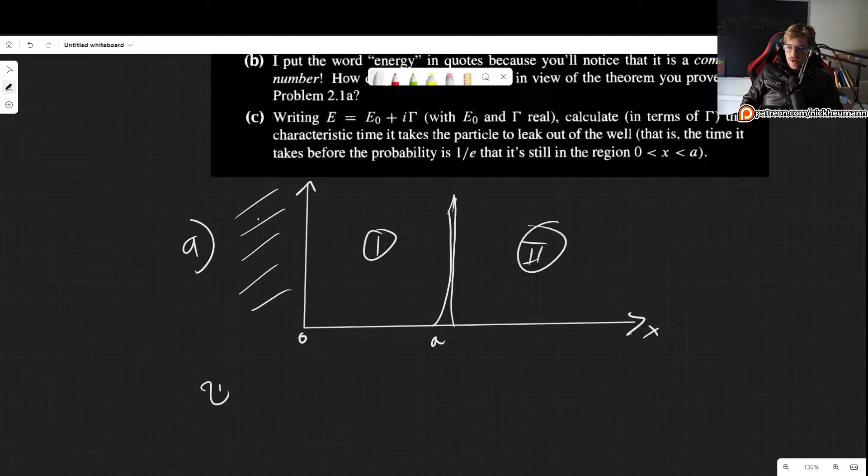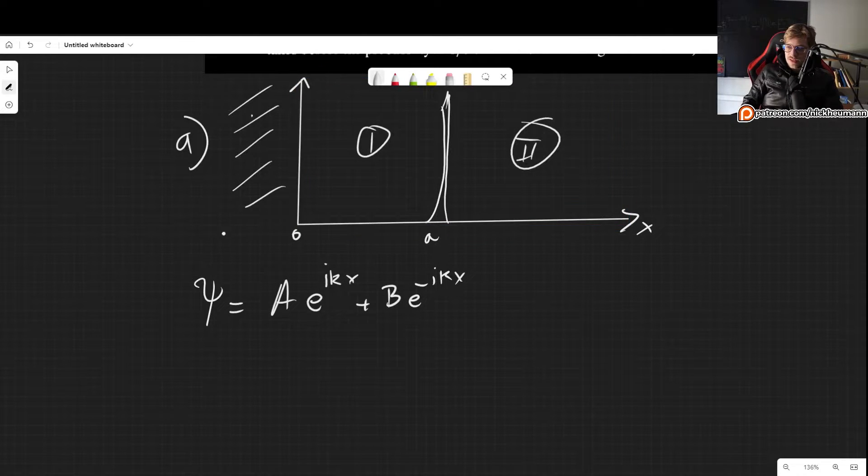So let's find our wave function. Well, this is something we have done very often. We solve the Schrödinger equation for the potential equal to 0, and we will get something like A e to the i k x plus B e to the minus i k x. And that is for region 1.